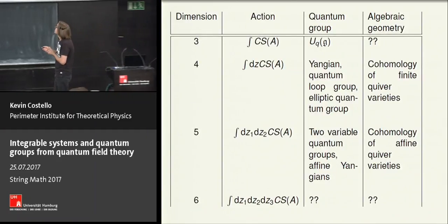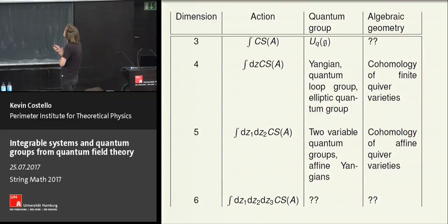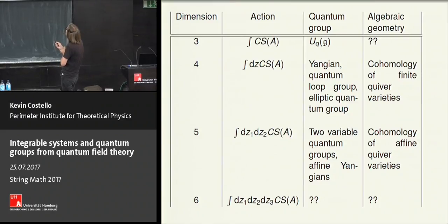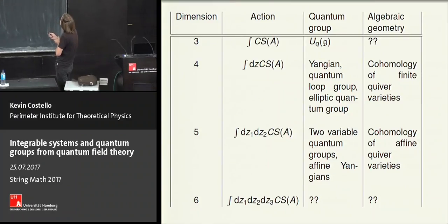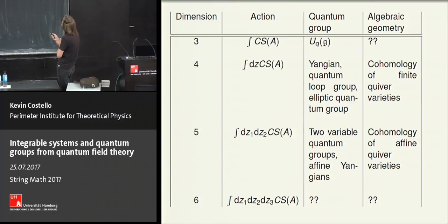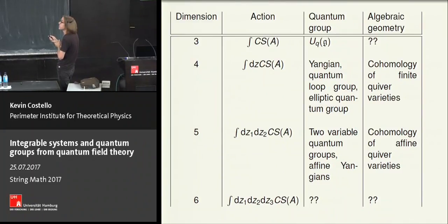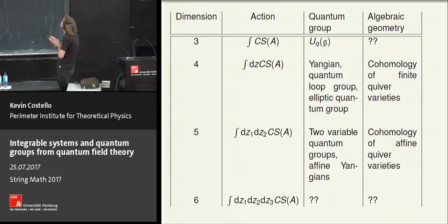The theory I'm focusing on today is a four-dimensional cousin of Chern-Simons theory, which is related to the Yangian, and depending on what background we put it on, also to the quantum loop group or the elliptic quantum group. This is a theory defined on a four-manifold, one of whose directions is holomorphic and two of which are topological. There is also the original Chern-Simons theory, and these theories extend all the way up to dimension six.